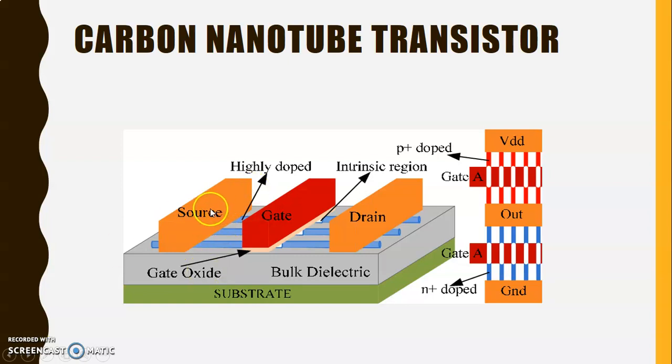Here you have a source, then a gate, a drain, gate oxide, bulk dielectric, then substrate. This is the gate oxide, then you have intrinsic region and all these things are present. Just go through the diagram, this is very important.